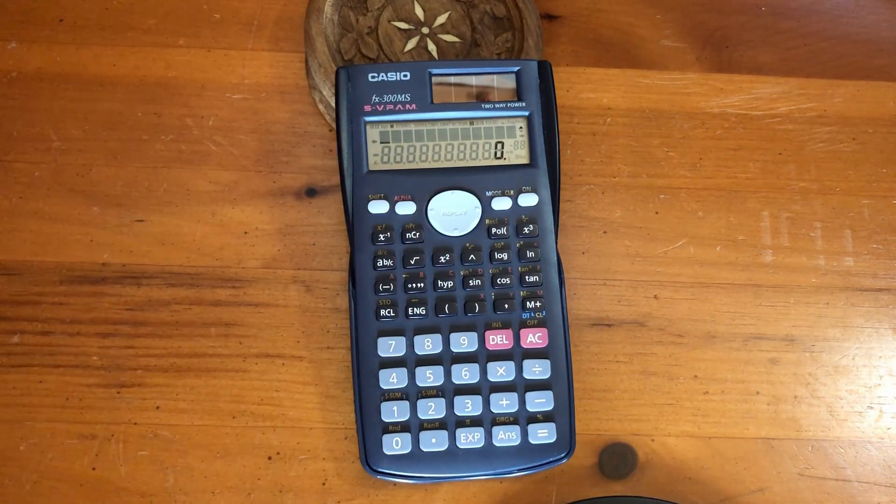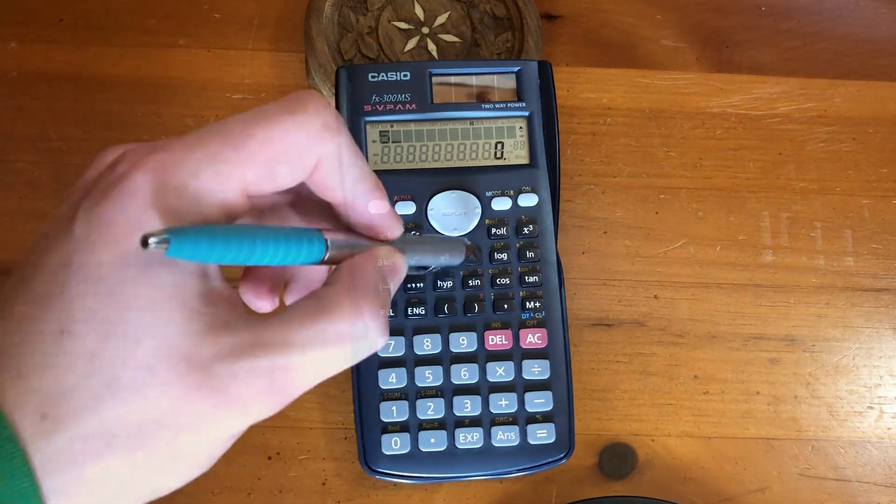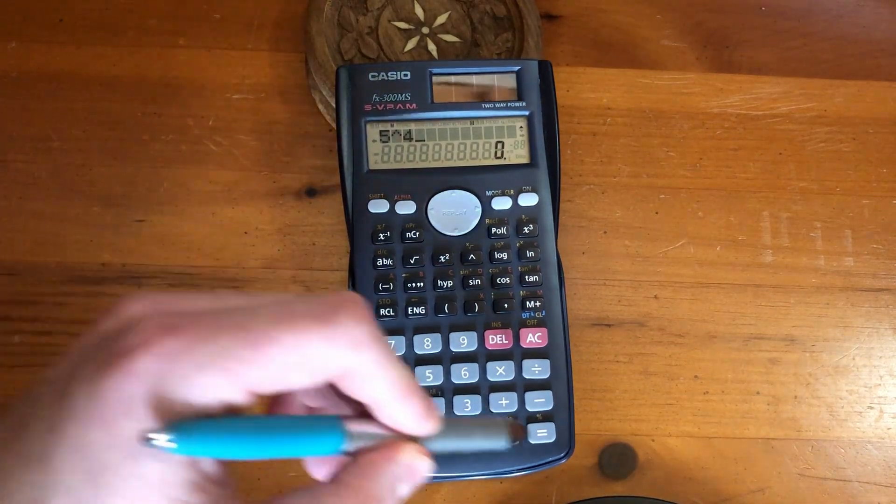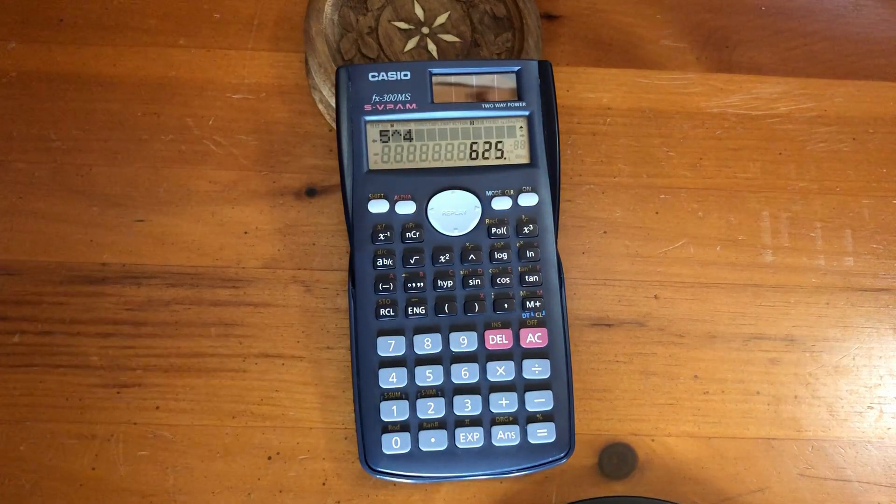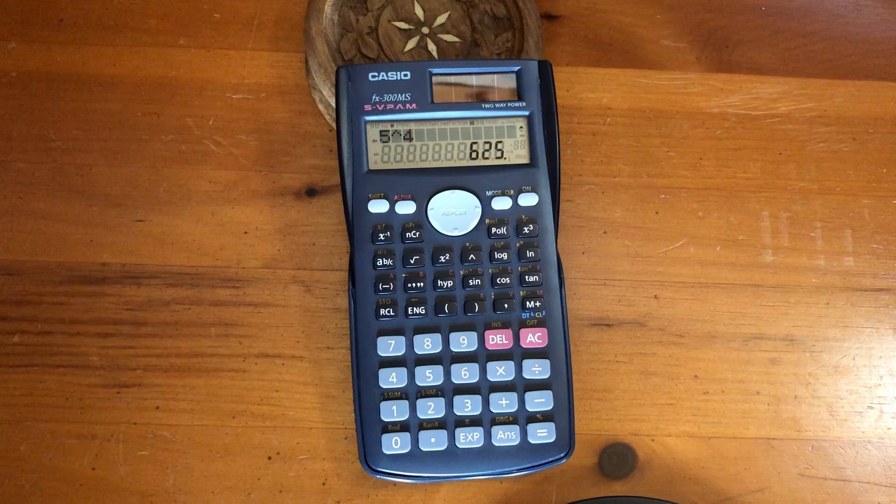For example, 5 to the power of 4 equals 625. Another example of raising to another power is 5 to the power of 5.